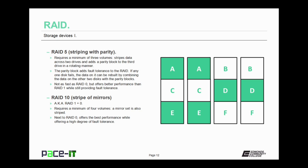If you have the ability, you might want to implement RAID 10, also called a stripe of mirrors, or sometimes referred to as RAID 1+0. It requires a minimum of at least four volumes, and it involves a mirror set that is also striped. Next to RAID 0, it offers the best performance, but it also offers a high degree of fault tolerance.